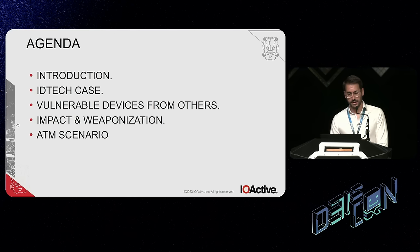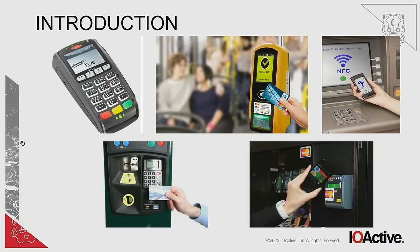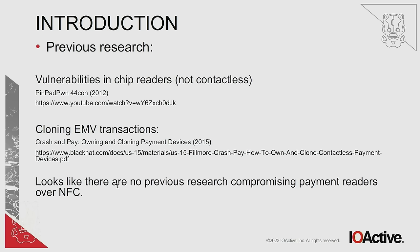This is the agenda for the presentation. We'll have some interaction, then describe with technical details some of the code execution issues, and then talk about the ATM scenario. One important thing to note is that all the issues we'll see here affect different scenarios and devices — typical portable payment devices in restaurants or shops, devices for bus or train stations, ATMs, parking machines, and vending machines.